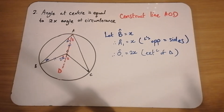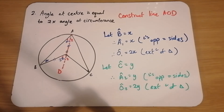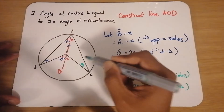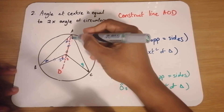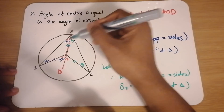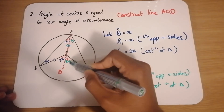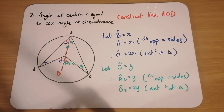In the same way, I'm going to do the exact same thing for the other triangle. Now I want to let angle C be equal to Y, because I've already used X, so I'll use a different variable Y. Then A2 is also going to be Y, because we have these radii — OC is equal to OA. And then we also have the exterior angle here, which will be equal to 2Y, from those two Y's added together.